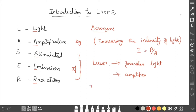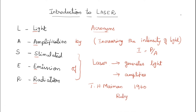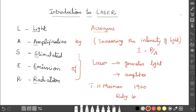The next thing is who invented laser. T. H. Maiman, in the year 1960, developed the ruby laser. He is the one who invented laser.